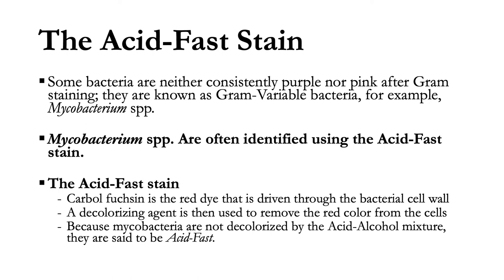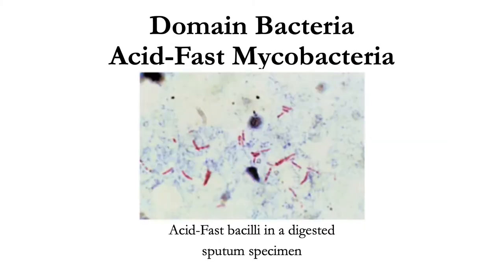Some bacteria are neither consistently purple nor pink after gram staining — these are known as gram-variable bacteria. An example is Mycobacterium species, for which we use the acid-fast stain.